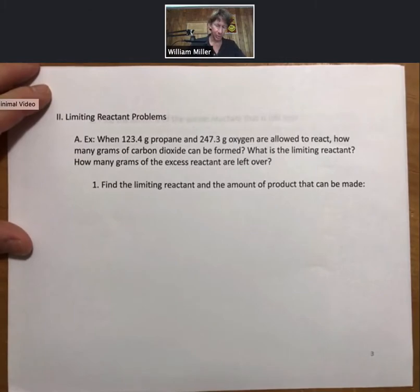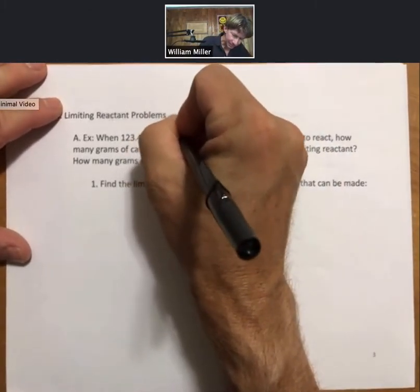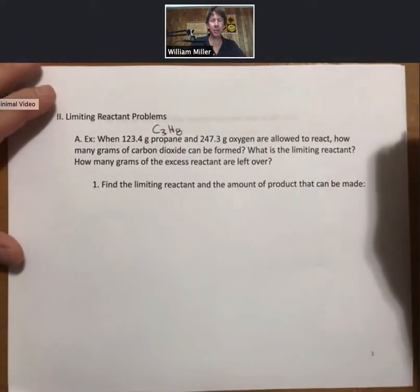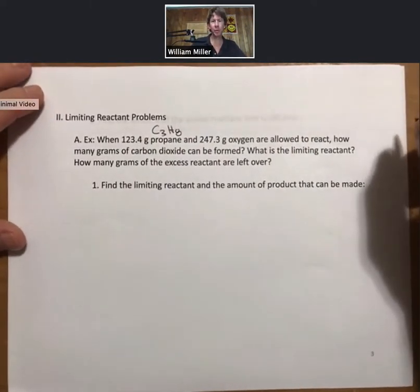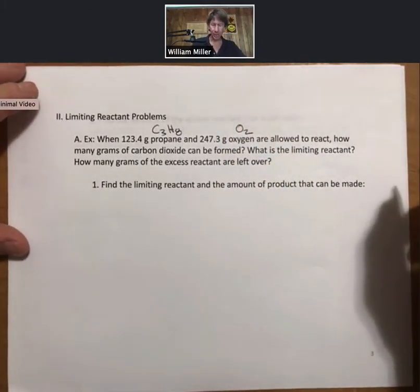When 123.4 grams of propane, which we know is C3H8, and 247.3 grams of oxygen are allowed to react, how many grams of carbon dioxide can be formed, what is the limiting reactant, and how many grams of the excess reactant are left over?